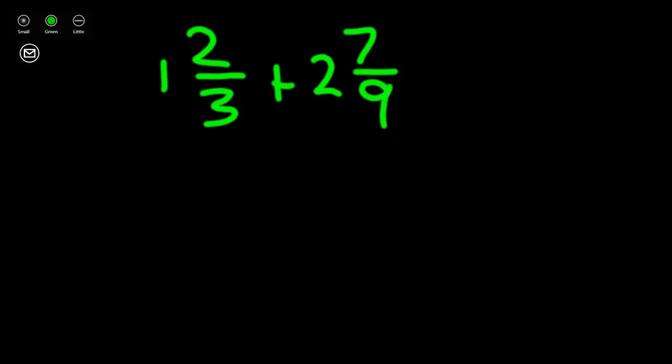Now we see that we have two whole numbers in front of our mixed numbers: 1 and 2. We're going to add those numbers together to get them out of the way. 1 plus 2 is 3. We have three wholes so far.